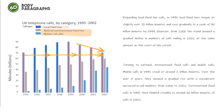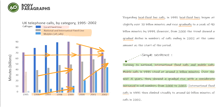'Mobile calls in 1995 stood at around 2 billion minutes; over the next four years they showed a gradual rise, with a considerable increase in call numbers from 2000 to 2002. International fixed calls in 1995 then climbed steadily to around 60 billion minutes of calls in 2002.' This example gets 6.0 firstly because it does not use referencing well, which leads to repetition of phrases and words. Also, there is incorrect word formation — 'with a considerate increased' should be 'with a considerable increase.' On top of that, there is frequent use of simple sentence structures throughout the entire report.